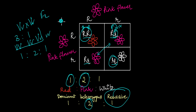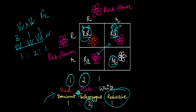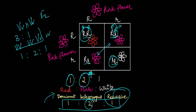So we can say that these traits are not exactly following Mendel's inheritance, but this doesn't disprove Mendel's laws of inheritance. There are many traits inherited in Mendel's pattern, and we can observe this is following it to a certain extent because we are getting the 1:2:1 genotypic ratio in the F2 generation. So this is all about incomplete dominance.